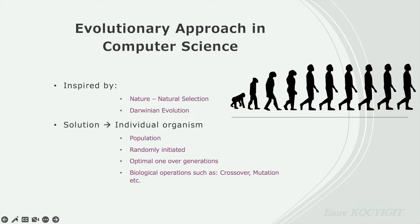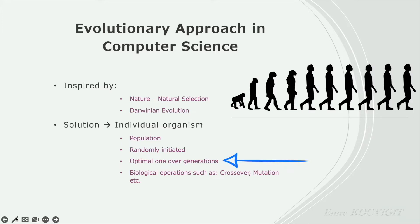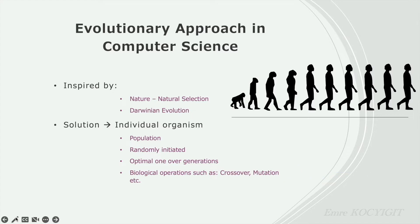An important point here is that the initial population will be generated randomly. Then, according to natural selection principles, new generations will be generated, and with each generation our solutions will improve and become more powerful and effective. Biological operations such as crossover, mutation, etc. will be used during this process. Finally, the optimal individual will be created.